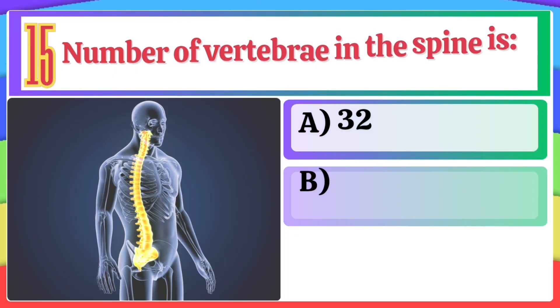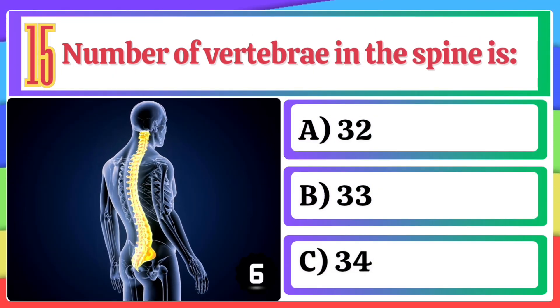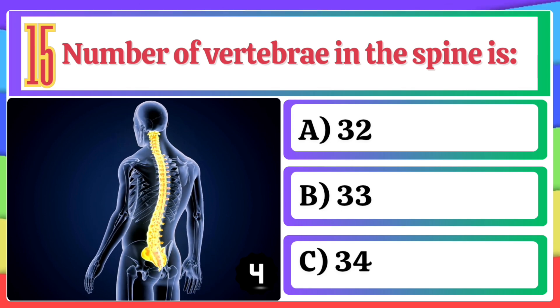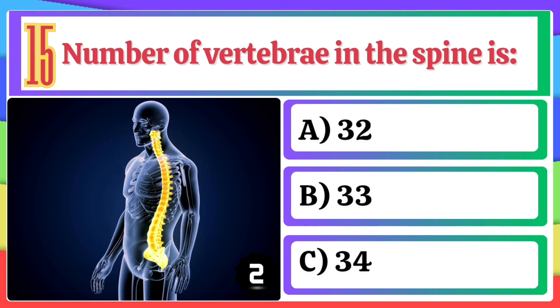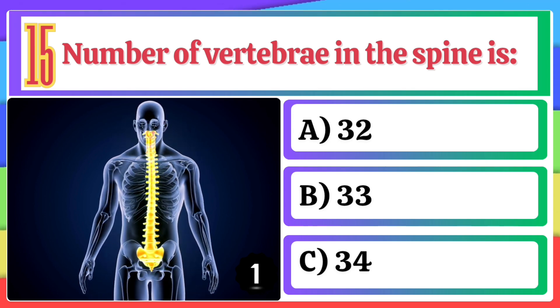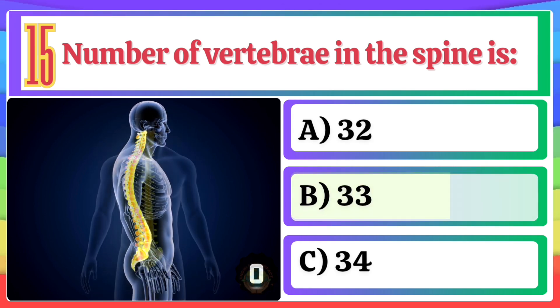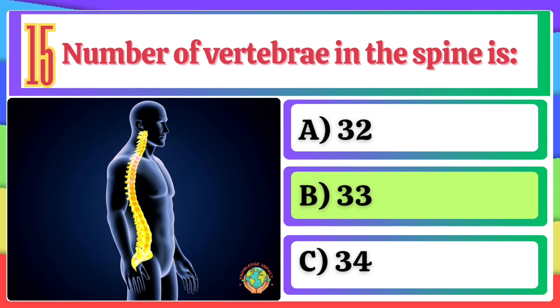Number of vertebrae in the spine is: A) 32, B) 33, C) 34. The correct option is B, 33.